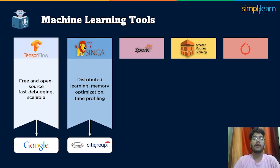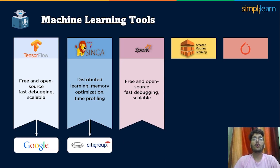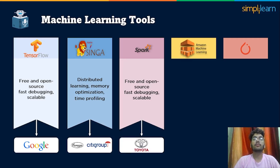Next we have Apache Spark, an open-source unified analytics engine. Spark comes with features like pre-processing, data transformation, and many more. Spark machine learning tools power the Toyota Customer 360 Insights platform and Social Media Intelligence Center.